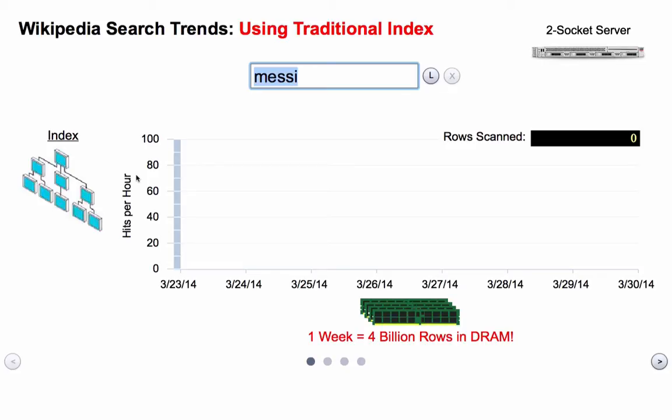We found we could get real live Wikipedia search data. The Wikipedia search data basically shows what searches people did every day of the week for the last few years. We built a simple application on top of this that takes that Wikipedia search data and performs SQL analytics operations on it. I'll show you how this works.